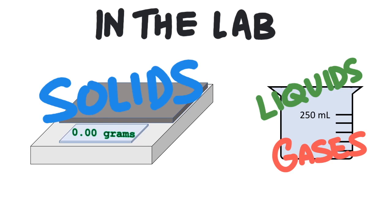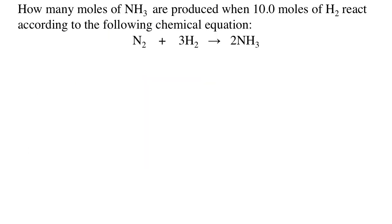Before we solve a problem using grams or liters, let's solve an easy one with just moles. How many moles of ammonia are produced when 10 moles of hydrogen gas react according to the following chemical equation?